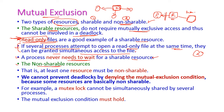When it comes to non-shareable resources, at least one resource must be non-shareable — meaning only one process can access the resource at a time. We cannot prevent deadlock by denying the mutual exclusion condition because some resources are basically non-shareable. For example, if it is not a read-only file but a common file and we allow processes to write simultaneously, we cannot allow all processes to write at the same time. Hence the write operation should be non-shareable.